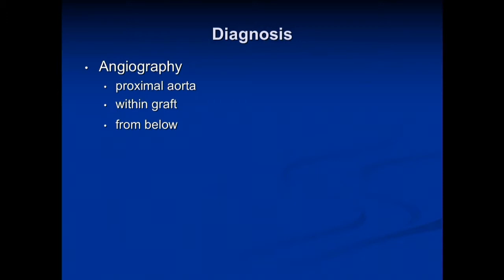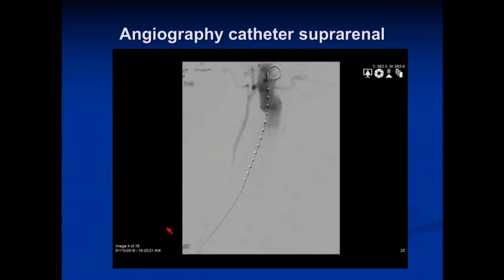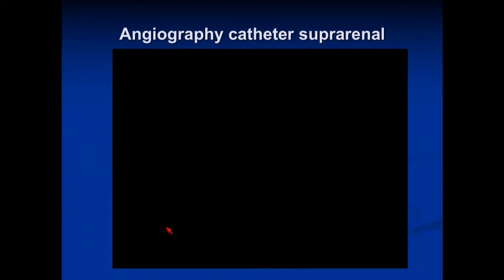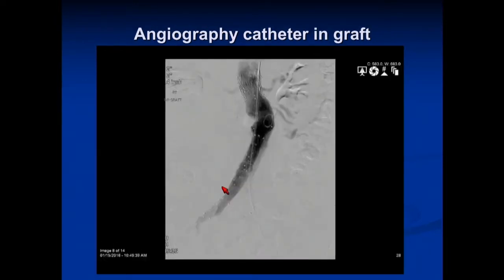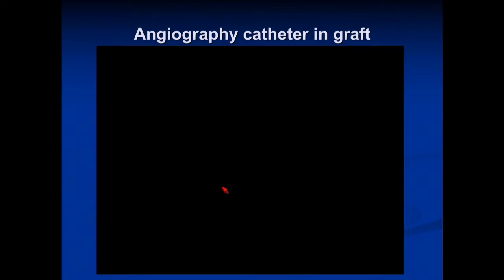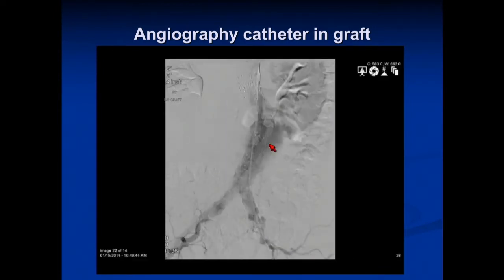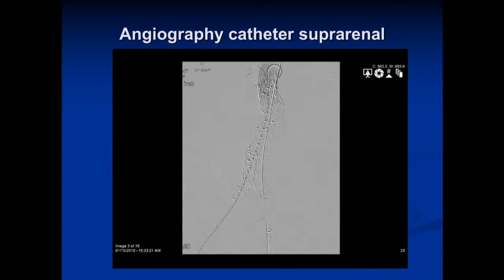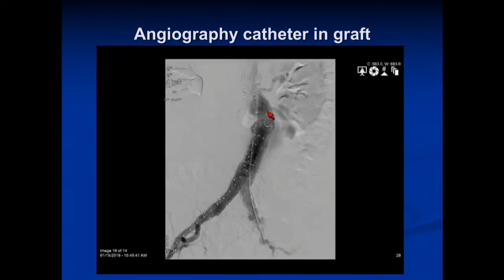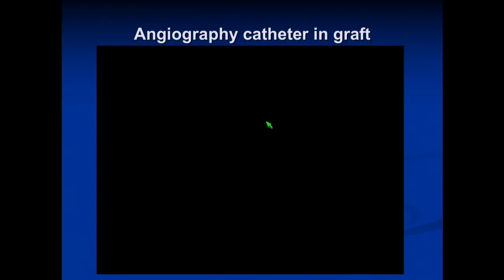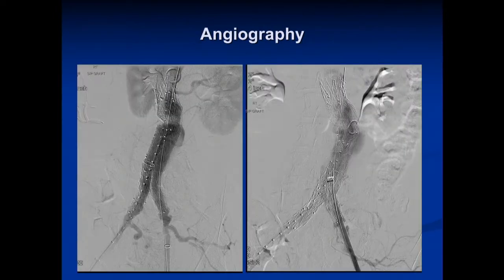For a more definitive diagnosis, we can do arteriography with a catheter placed in the proximal aorta within the graft and from below. Here is an angiogram showing a type 1 endoleak — you can see it's blushing. With the catheter placed high above the renal arteries, you can see that there is an endoleak at the top. Then we can bring the catheter down into the graft to try to discriminate between a type 3 and a type 1 endoleak.